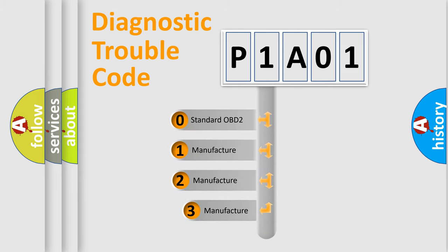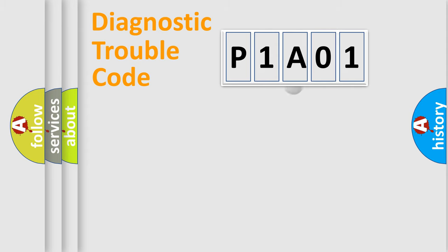If the second character is expressed as zero, it is a standardized error. In the case of numbers 1, 2, or 3, it is a more specific expression of the car-specific error.